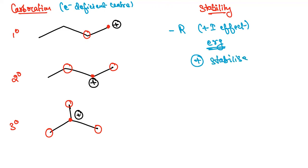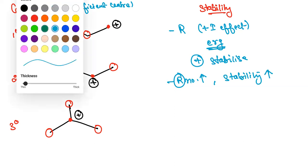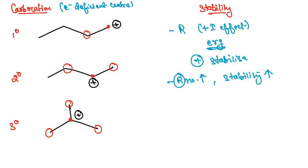The more alkyl groups that are present around the carbocation, the more stable it is. Comparing primary, secondary, and tertiary: primary has only one alkyl group in the adjacent position, so it has the lowest stability. In the secondary case, there are two alkyl groups ready to donate electrons, so its stability is more than primary.